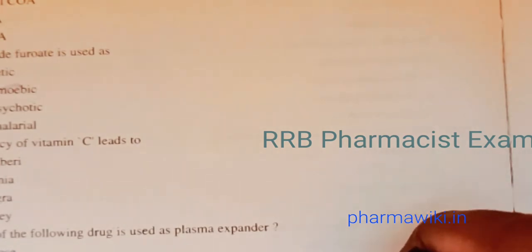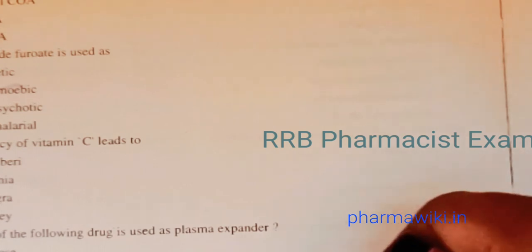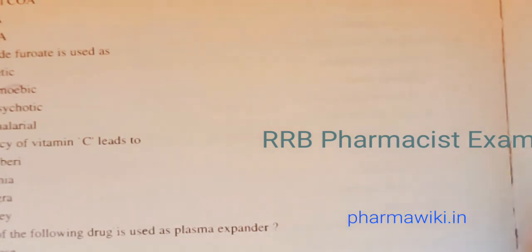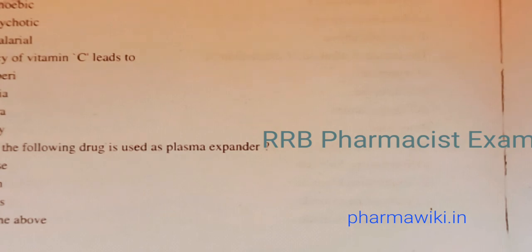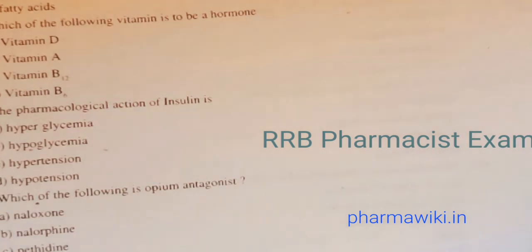Question 53: Sulfonamides are antagonized by PABA (para-aminobenzoic acid). Question 54: Which of the following drugs is used as a plasma extender — dextrose, dextran, or dextrins? The answer is dextran. Dextran is used as a plasma extender.